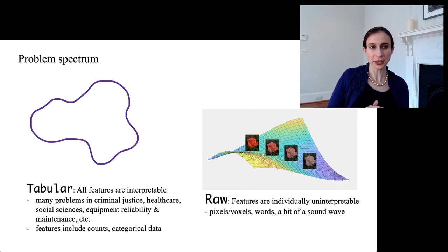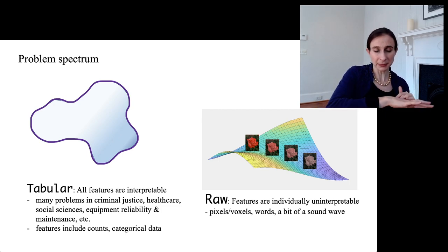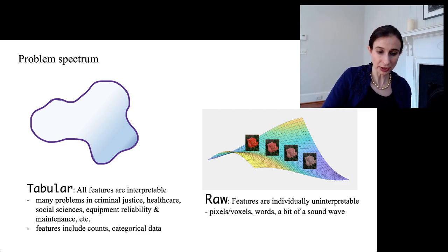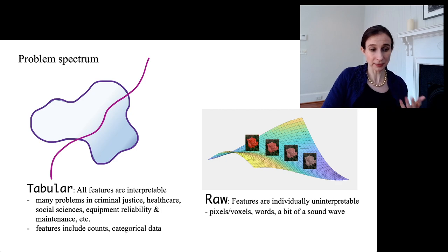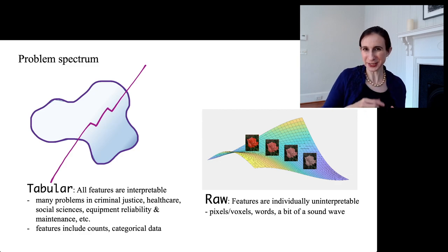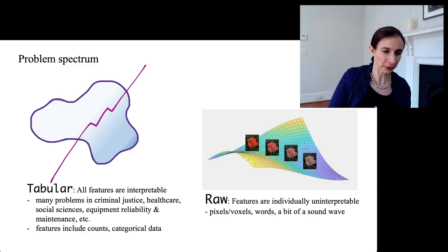Now, another thing is not just P of X is different, but P of Y given X is different between these datasets. So in tabular data, the probability of Y given X maybe changes fairly smoothly along the distribution. And so that allows lots of different reasonable decision boundaries to perform similarly. So here, maybe this represents a sparse decision tree that would perform just as well as some of the more complicated, more curved decision boundaries.